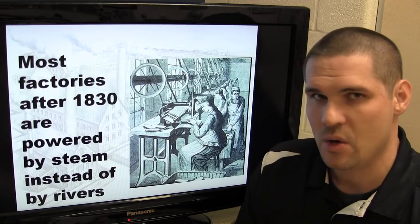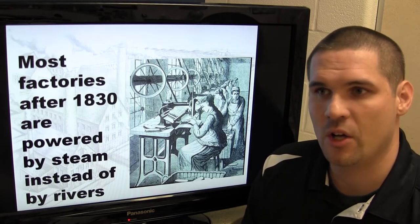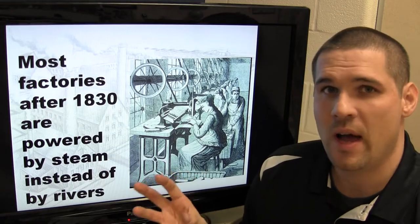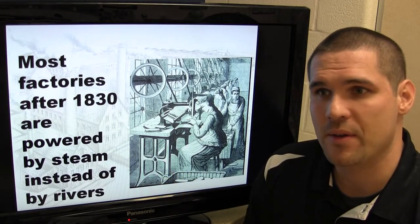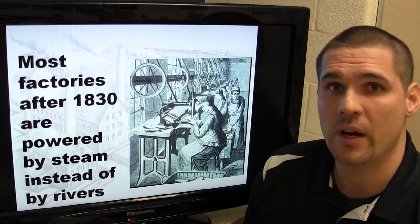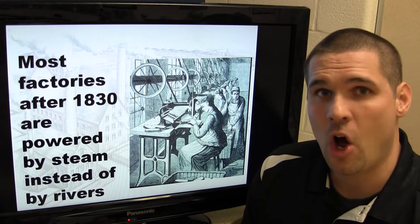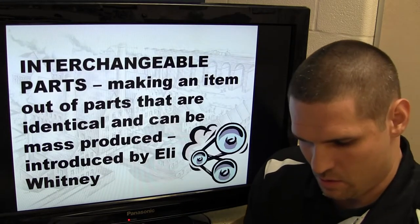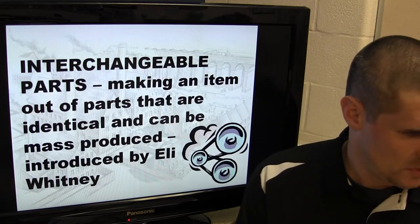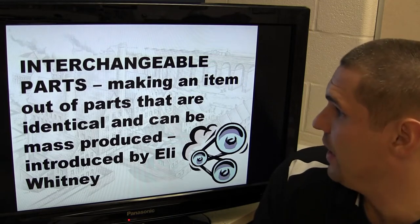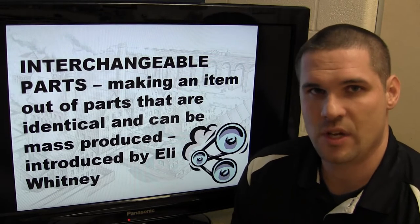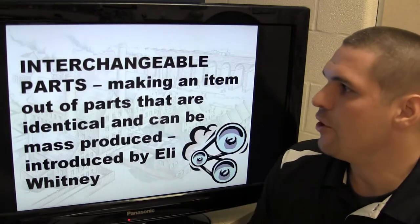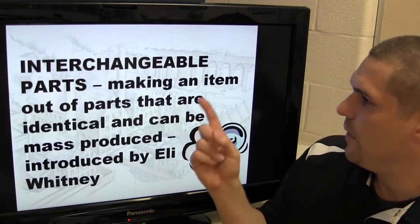In the early stages of industrialization, power came from hydropower. But by 1830, with advancing steam technology, factories no longer had to be built right on a river — they could be built almost anywhere, since engineers now knew how to harness the power of steam.